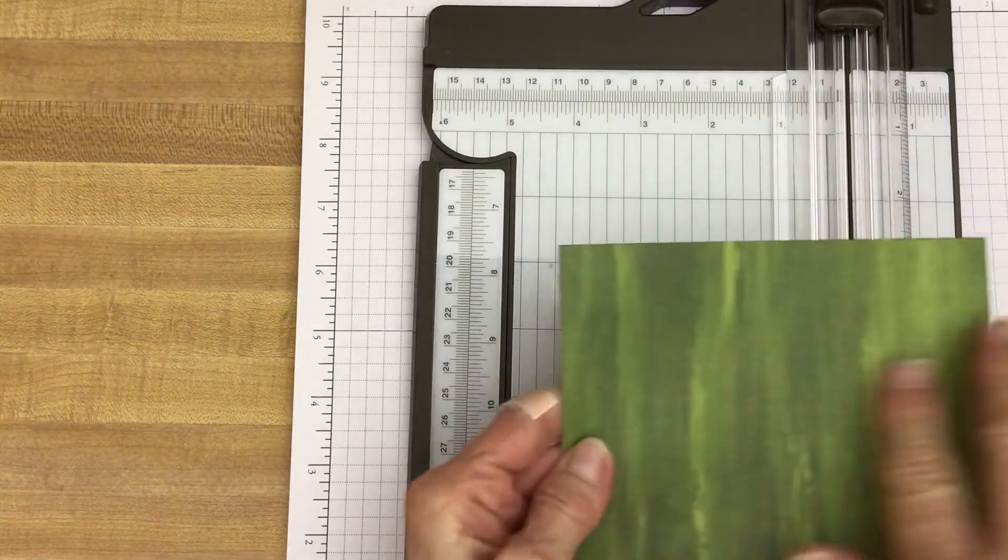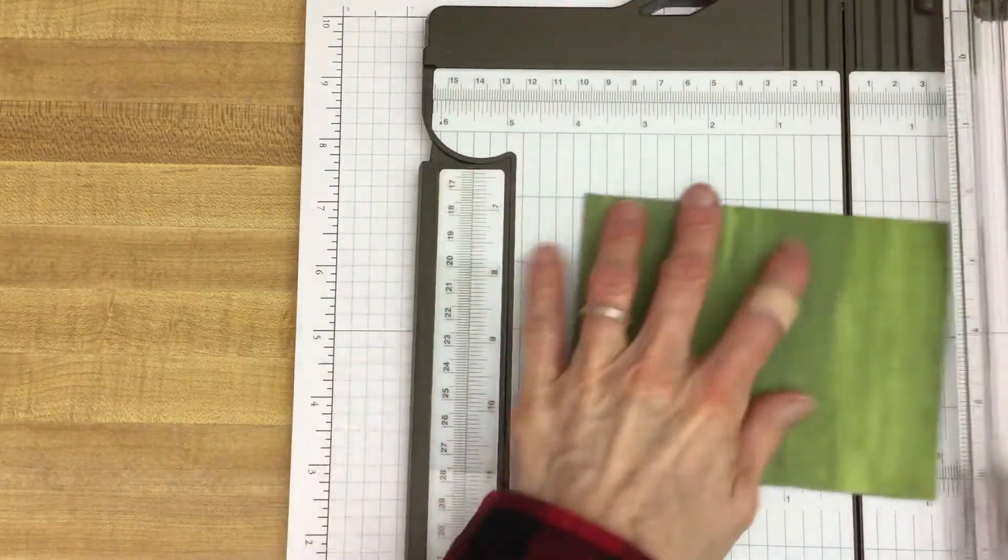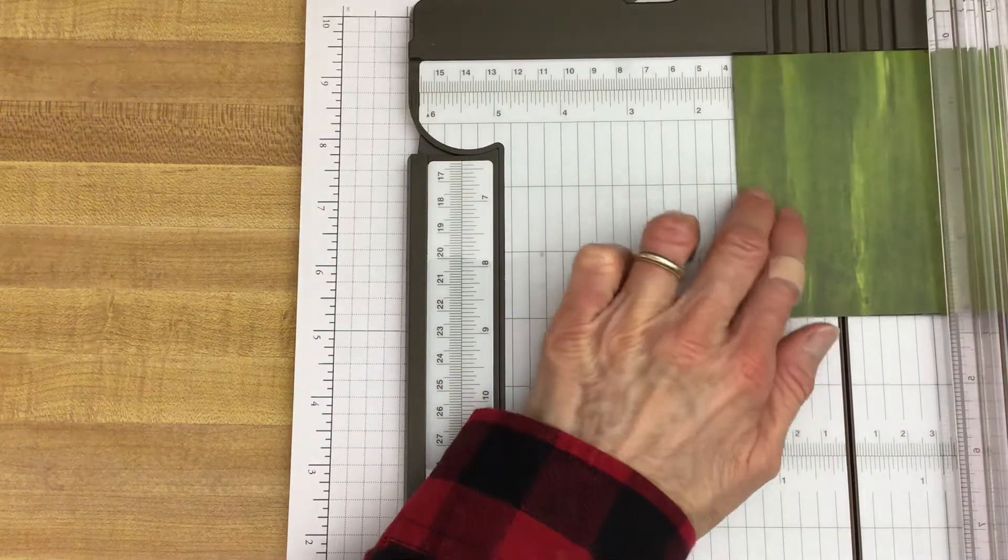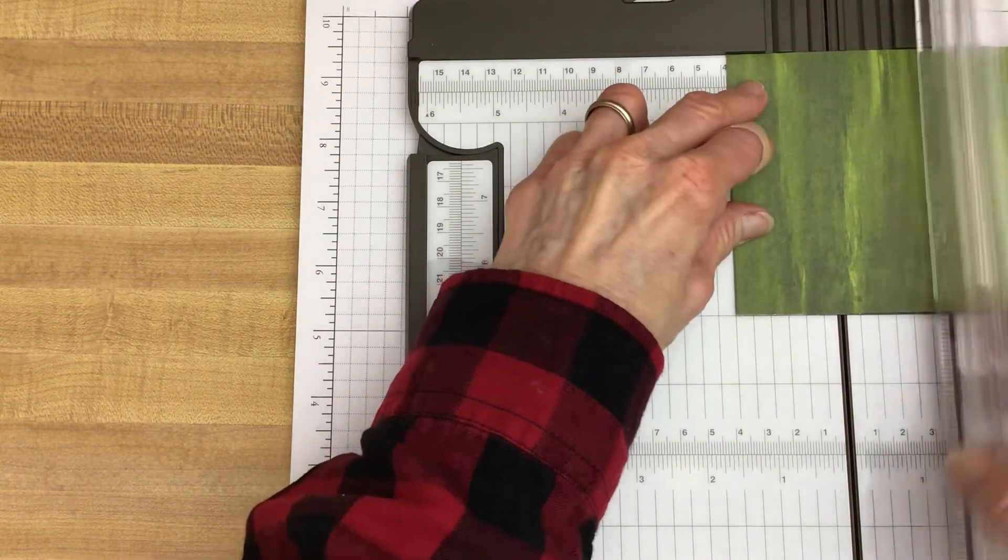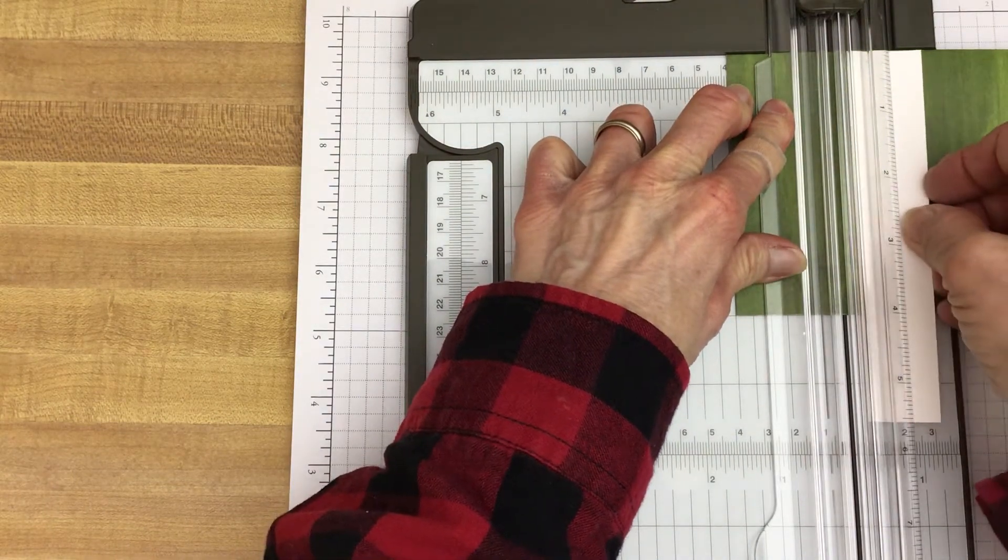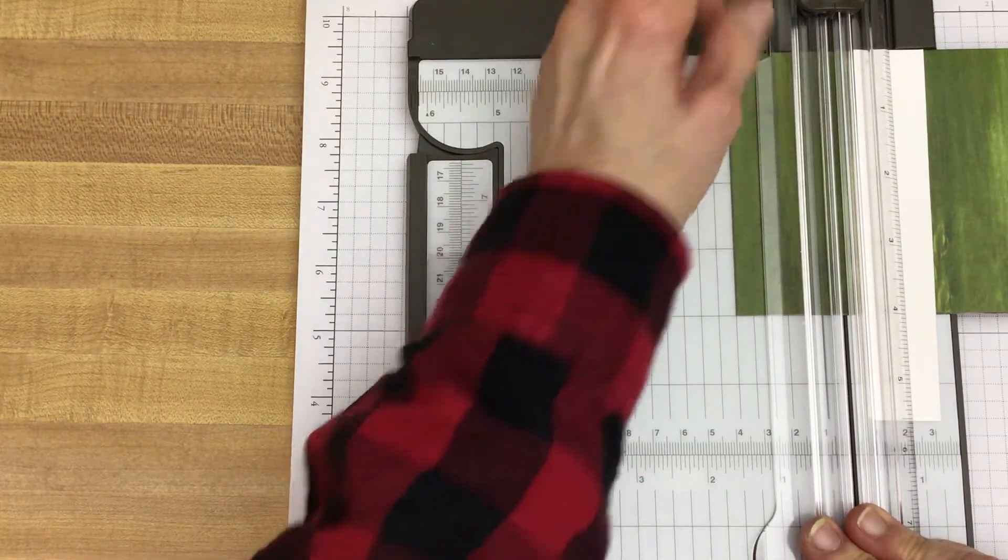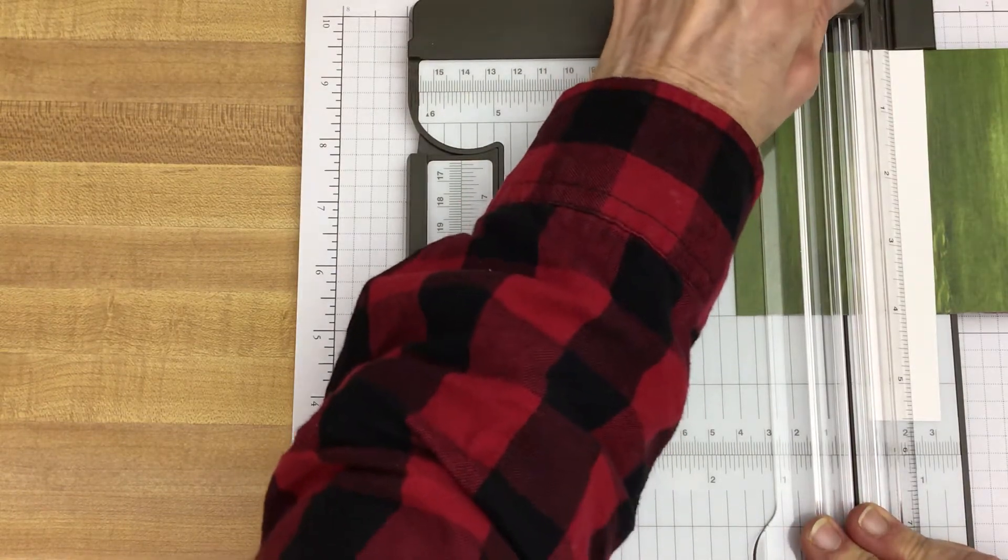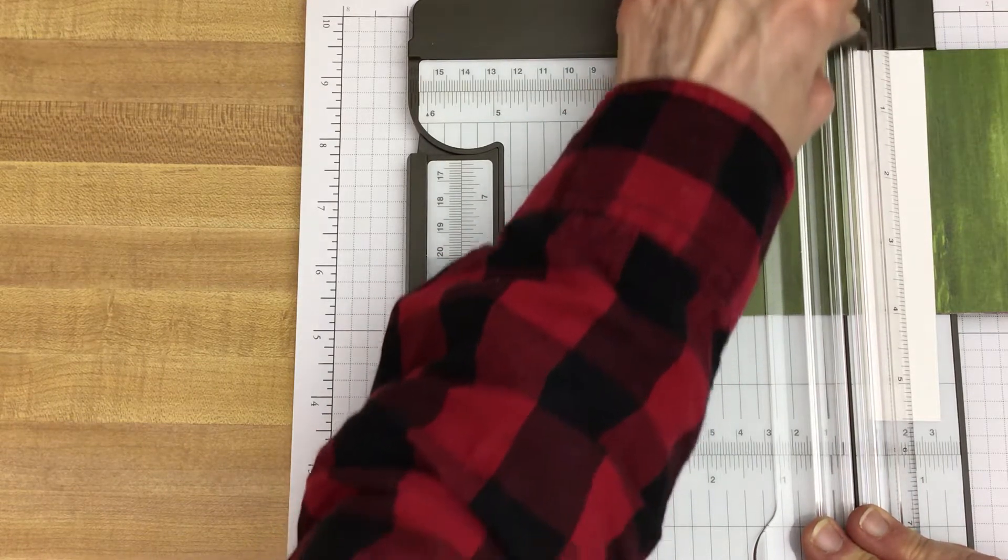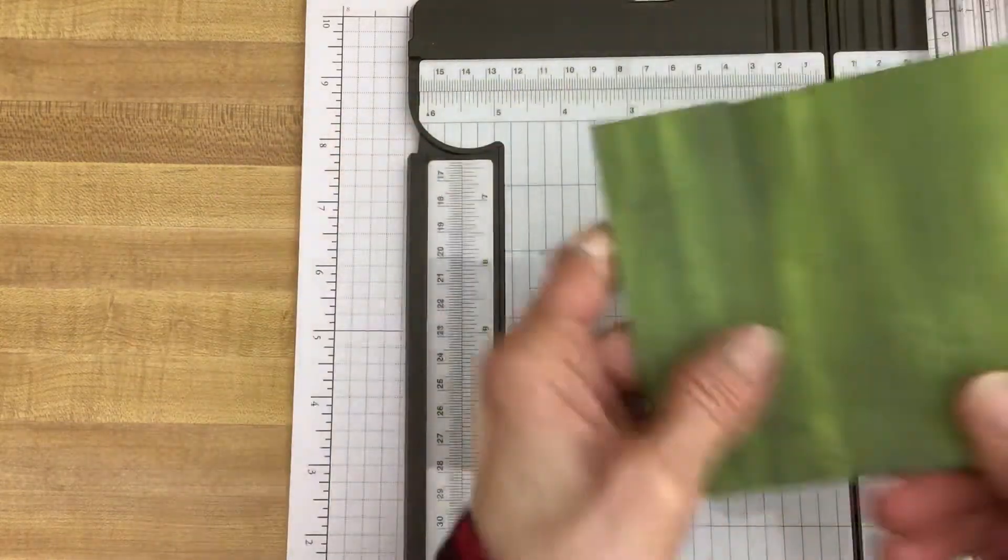And then this is the side that would be showing in your card. So we're going to open this up and slide this down to 1 and 1/2 inches. Close it up. And I put a little piece of white cardstock here so I can kind of see where I'm going. Because we want to go from the fold to 1 and 1/2 inches. We're going to cut.